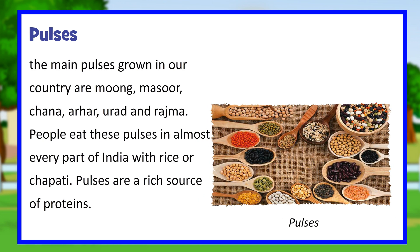Pulses. The main pulses grown in our country are Moong, Masoor, Chana, Arhar, Urad and Rajma. People eat these pulses in almost every part of India with rice or chapati. Pulses are a rich source of proteins.